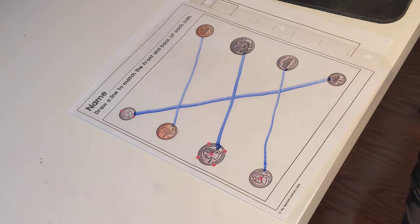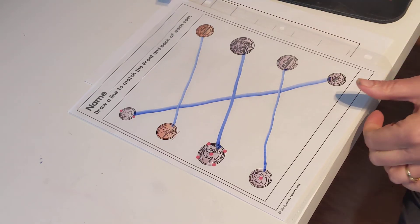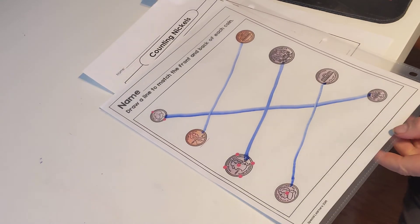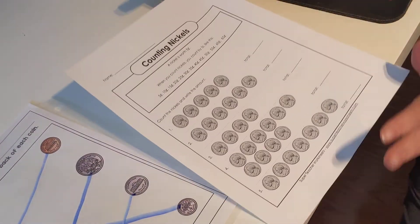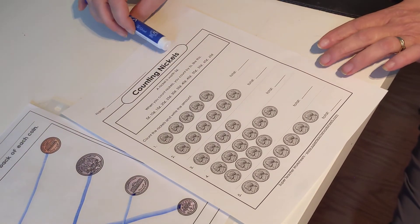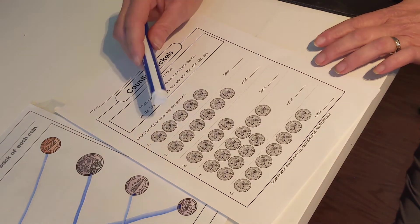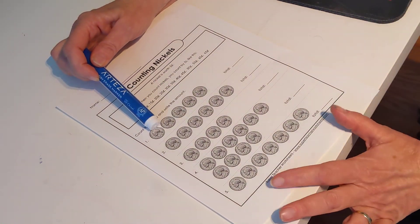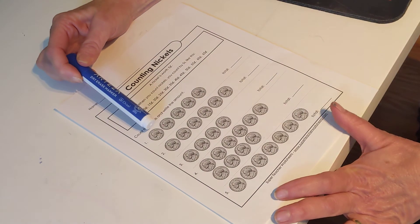Today you have a counting by five song. I think you had that same song yesterday. It's a fun song. Go ahead and practice that song again. And then you do have the counting nickels worksheet today. Let's just do the first one together and then you can do the rest on your own or with your families.